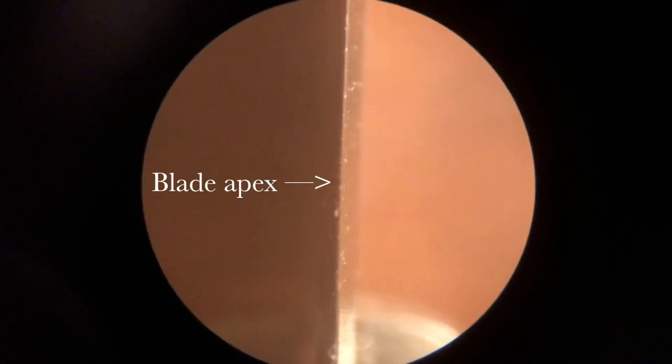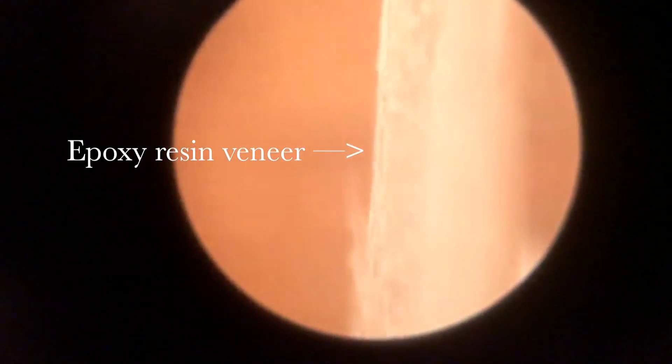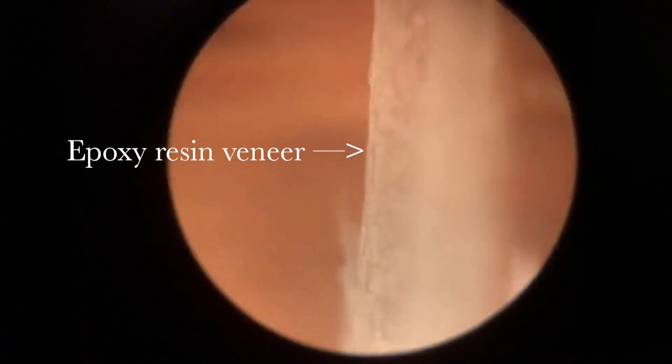Here we see the edge of a razor blade magnified under my microscope, and here we see the epoxy resin veneer, showing that the edge is about as thin as the apex of the razor blade.